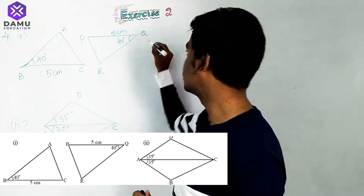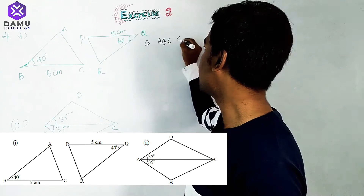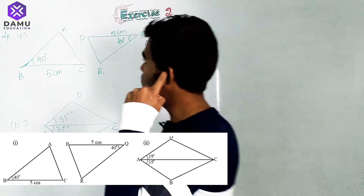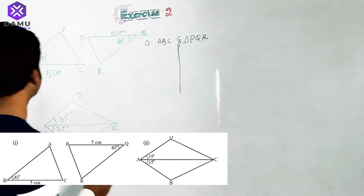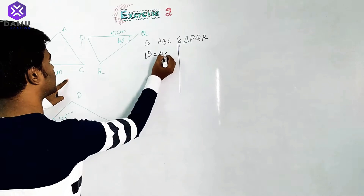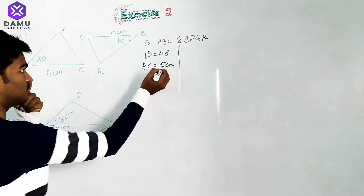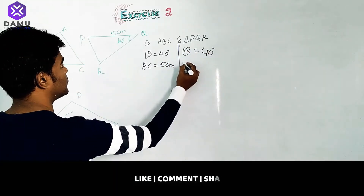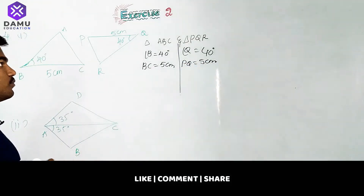Let's take triangle ABC and triangle PQR. In both triangles, we are given that angle B equals 40 degrees and BC equals 5 centimeters. Similarly, angle Q equals 40 degrees and PQ equals 5 centimeters.